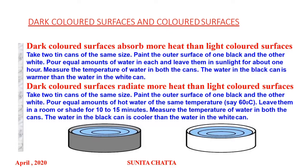Dark colored surfaces radiate more heat than light colored surfaces. We can prove this by an experiment: take two tin cans of the same size, paint the outer surface of one black and the other white, pour equal amounts of hot water of the same temperature — say 60 degrees C — into each, and leave them in a room or shade for 10 to 15 minutes. Measure the temperature of the water in both cans. The water in the black can will be cooler than the water in the white can.